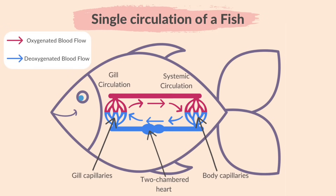The pink arrows represent the oxygenated blood flow, or blood rich in oxygen. The blue arrows represent de-oxygenated blood flow. Fish do not have lungs since oxygen is absorbed when the blood passes the gills. De-oxygenated blood from the body capillaries moves through the two chambers of a fish's heart — the atrium and the ventricle — and then reaches the gill capillaries where oxygen is absorbed into the blood. The blood then becomes oxygenated and moves from the gill capillaries to the body capillaries, completing one circuit.